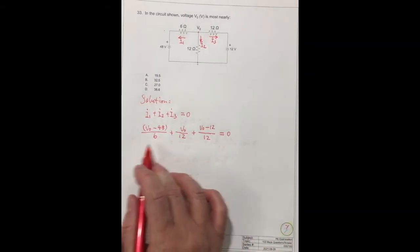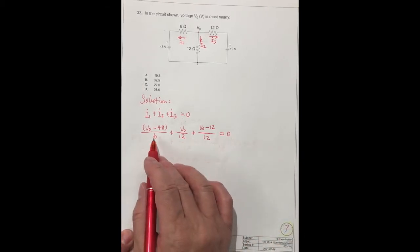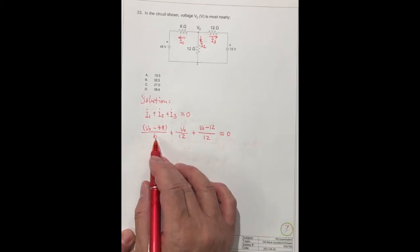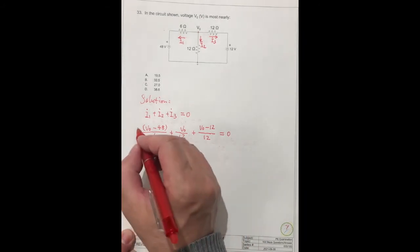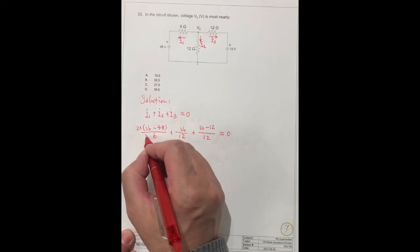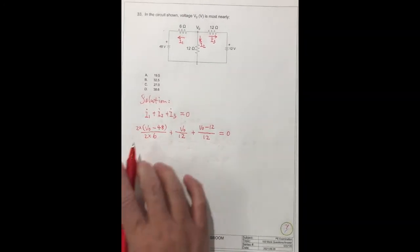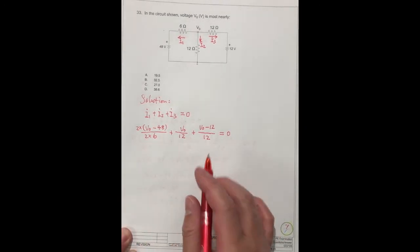So from this formula, we should simplify this equation. The denominator is 6, this is 12. We can divide by 2, times by 2, both numerator and denominator. Right? So we can remove all the denominators.